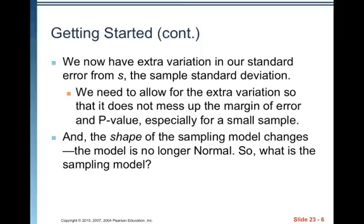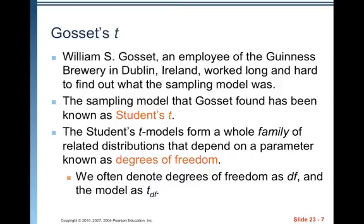We need to allow for the extra variation so that it does not mess up the margin of error and p-value, especially for a small sample. The shape of the sampling model changes because of that extra variation — the model is no longer normal. William S. Gossett, an employee of the Guinness Brewery in Dublin, Ireland, worked long and hard to find out what the sampling model was. The sampling model that Gossett found has been known as Student's t.